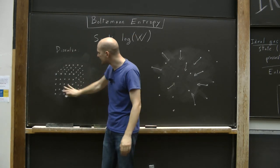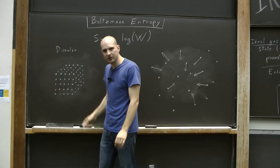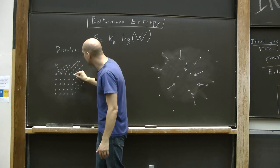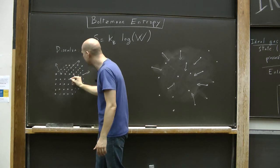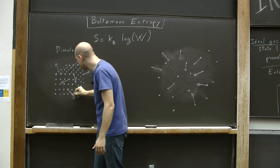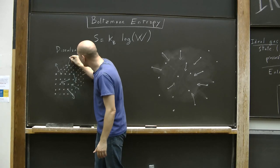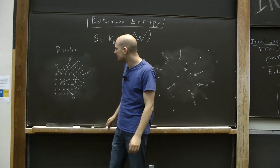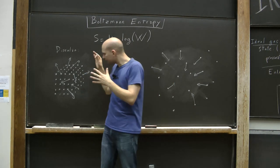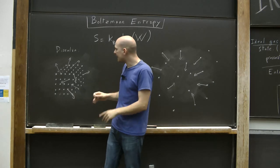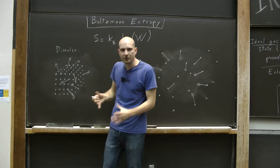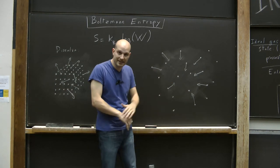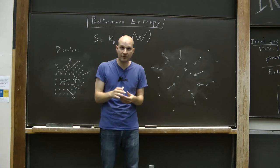Well, the point is that if I start in this ordered sugar cube form, whatever my sugar molecules do - they can move in completely erratic, completely random ways - whatever they do, they're going to end up looking something like the dissolved state. So in short, the idea is that in order to be a sugar cube, there are very few states that look like a sugar cube, whereas there are very many states that look like dissolved sugar.